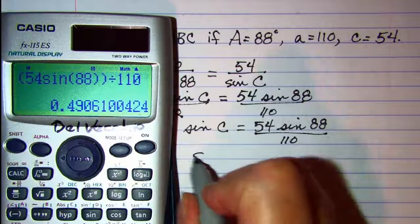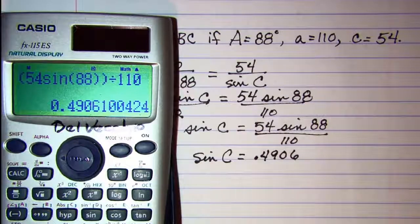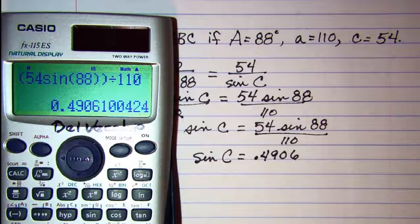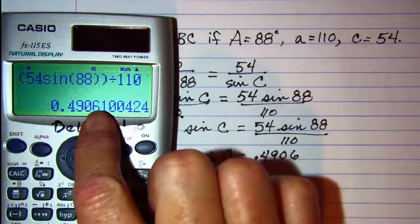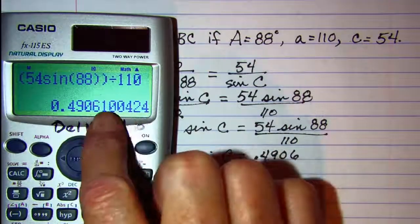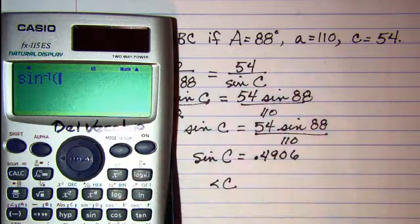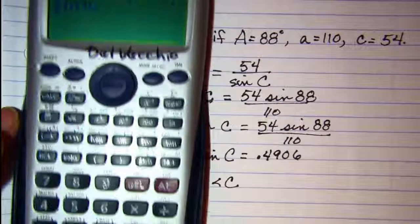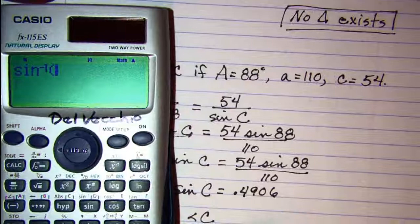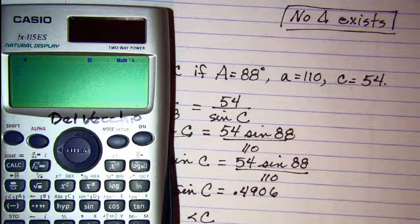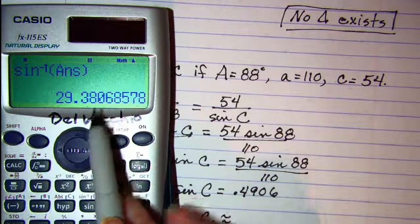We have the sine of angle C is equal to 0.4906. Now this time the sine is within the range that we need it to be. So to find angle C, we need to do an inverse sine of this number. Don't clear it out of your calculator because you don't want the rounding error. Just do inverse sine, and then find the key that pulls up the answer. So A and S, and then hit enter, and we see that the measure of angle C is approximately 29.38.